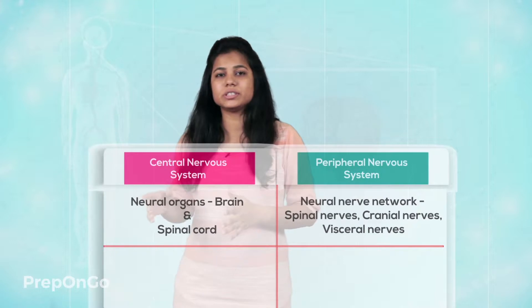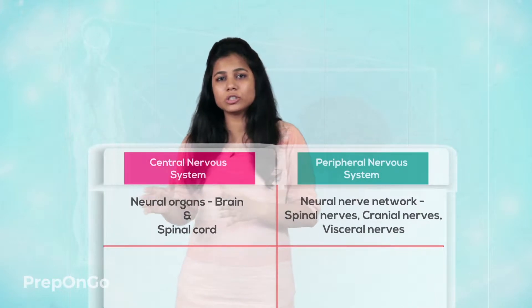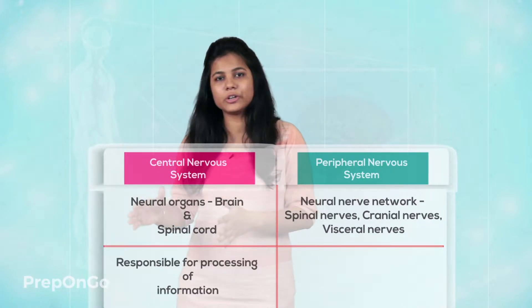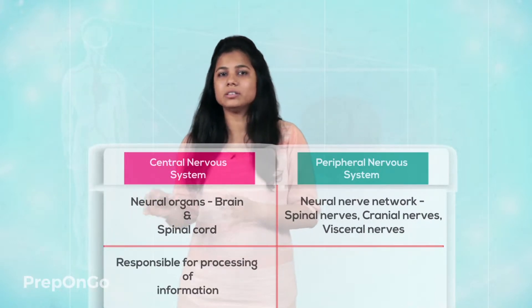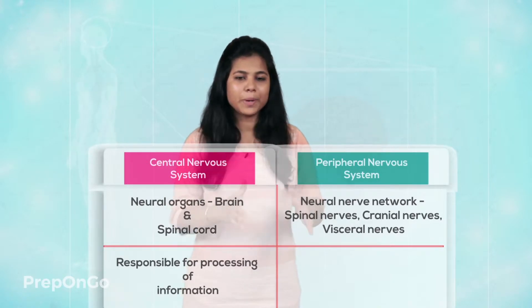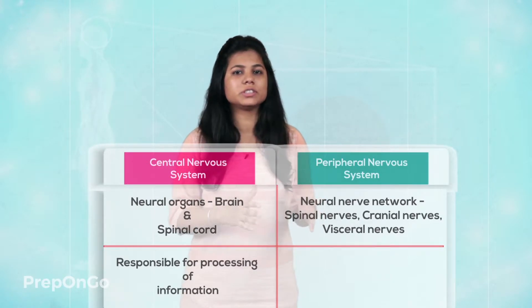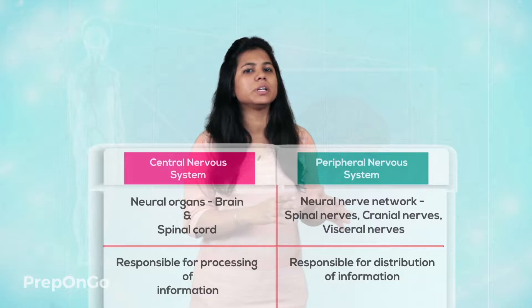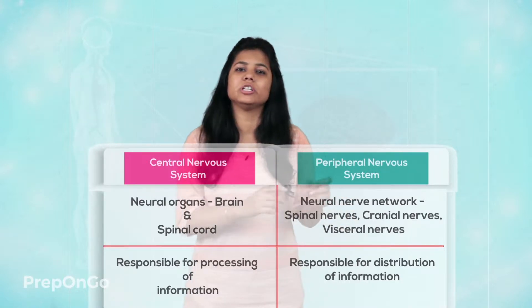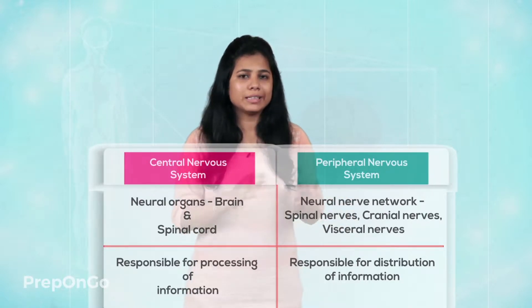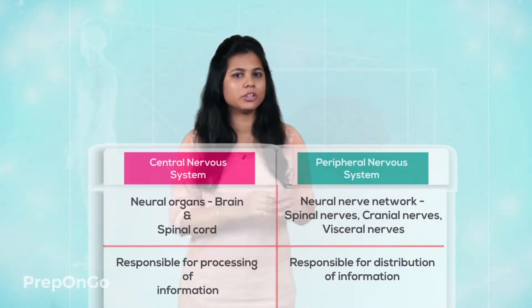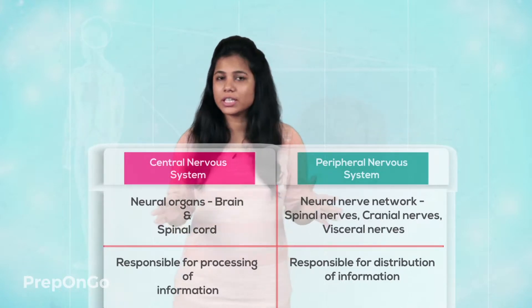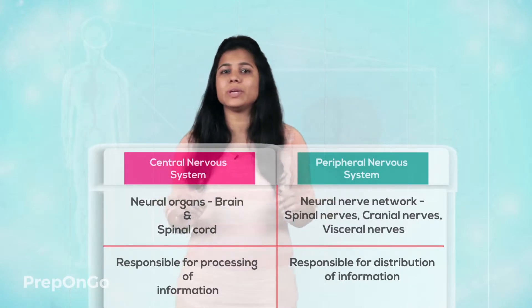In the central nervous system, you can also see that it has a controlling center, that is the brain. But in the peripheral nervous system, it has only a function to transmit the signals from one part of the body to the other, which means it does not have a controlling center. So we have seen the difference between the central nervous system and the peripheral nervous system.